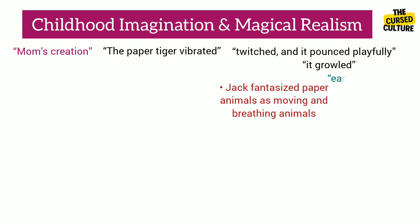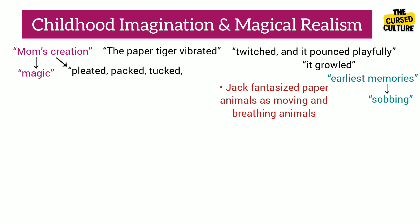The story begins with one of Jack's earliest memories associating magic with his mother, who creates a paper tiger to comfort and soothe him when he was uncontrollably sobbing. The mother pleaded, packed, tucked, rolled, and twisted deftly to make the paper tiger. Her act of inflating paper by blowing into it makes young Jack think that she was blowing life into it, and hence she was using her magic.